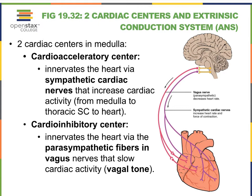Recall that the heart is characterized by dual innervation. By that we mean that the heart is an example of an organ that receives sympathetic motor neurons as well as parasympathetic motor neurons.